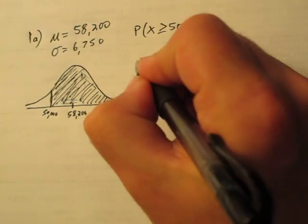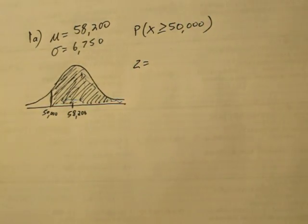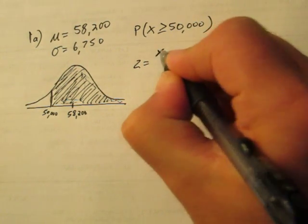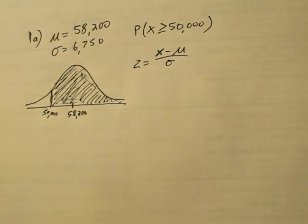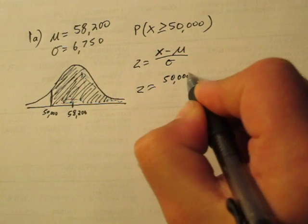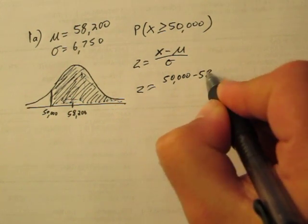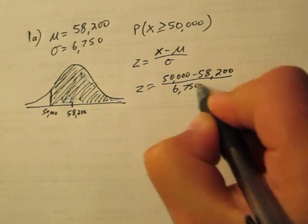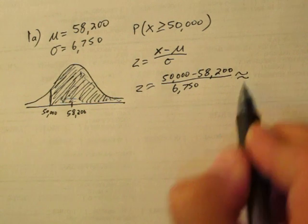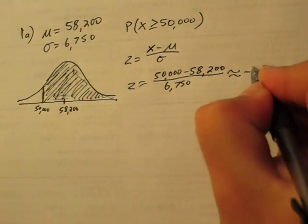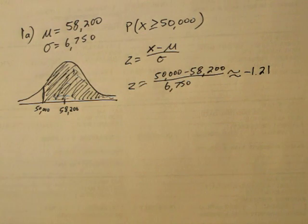To find out exactly, we need to use the Z formula to find a Z score. We can find a Z score by taking our value of interest, subtracting the mean, and dividing by the standard deviation. So in this case, 50,000 minus 58,200 all over our standard deviation. Plugging that into the calculator, we get a value of negative 1.21 approximately.